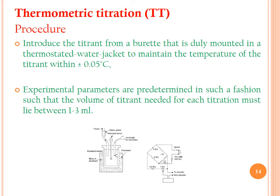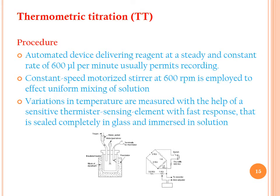The procedure: introduce the titrant from a burette duly mounted in a thermostated water jacket to maintain the titrant temperature within ±0.05°C. Experimental parameters are predetermined so that the volume of titrant needed lies between 1 and 23 mL. An automated device delivers the reagent at a steady rate of 600 µL/min. A constant-speed motorized stirrer at 600 RPM ensures uniform mixing. Temperature variations are measured with a sensitive thermistor sensing element, sealed in glass and immersed in the solution.